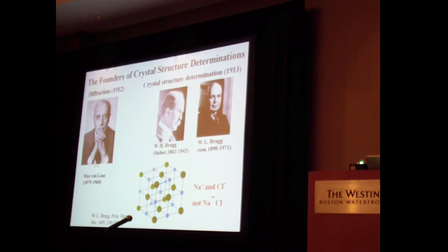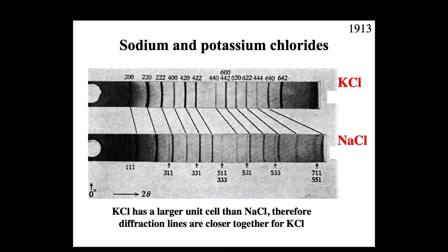And here is what you might find about potassium and sodium chloride, which were the kind of compounds the Braggs first looked at, because Pope and Barlow, mineralogists, were close friends of theirs. And so, you can see potassium chloride, which has a larger unit cell, because potassium is larger.